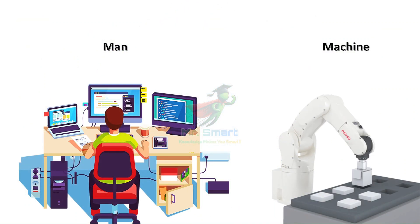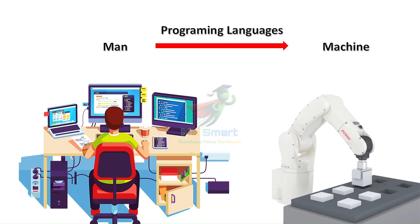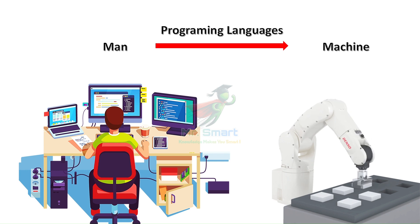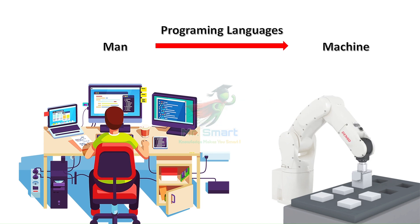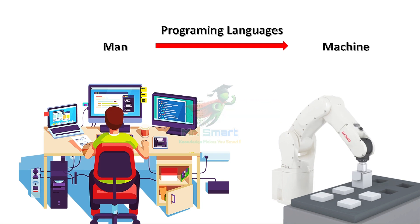That's exactly what happens in the digital world. Programming languages are the universal translators between humans and machines. Machines don't understand human speech — they only understand binary ones and zeros. We use programming languages to bridge that gap, just like a translator.